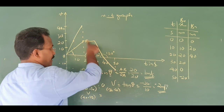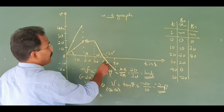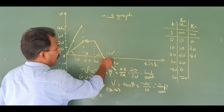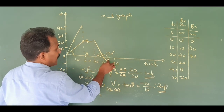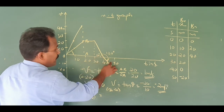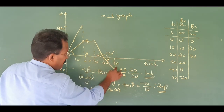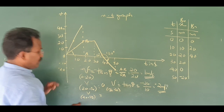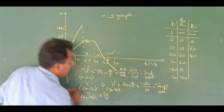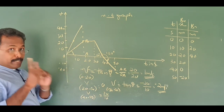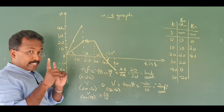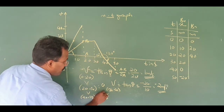This is the angle — the slope of the graph. The opposite side is 20 divided by 10. The slope calculation gives us the velocity. When the slope is negative, the velocity is negative.